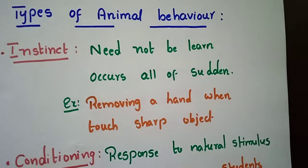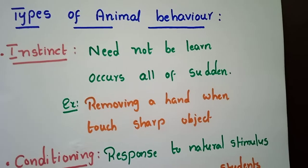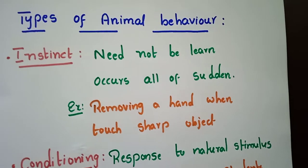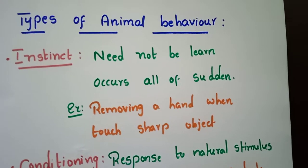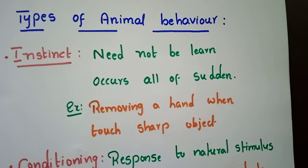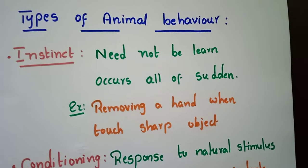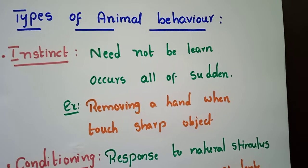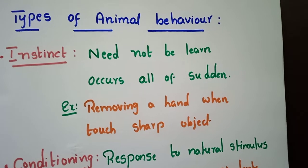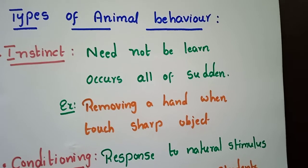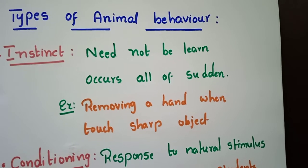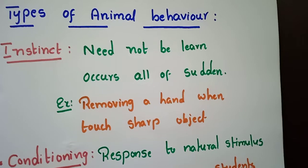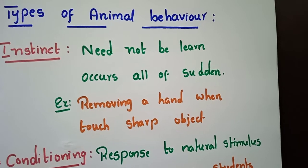Instinct. This behavior need not to be learned — that means it occurs all of a sudden. For example, we remove our hand when we touch a sharp object or any kind of fire. So, immediately we will remove our hand from that.